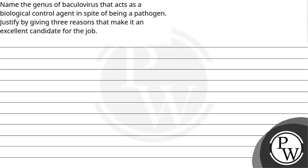Hello, let's see this question. The question says: Name the genus of baculovirus that acts as a biological control agent in spite of being a pathogen. Justify by giving three reasons that make it an excellent candidate for the job.